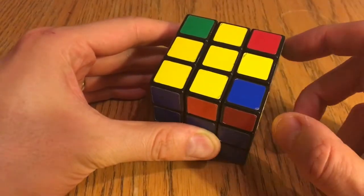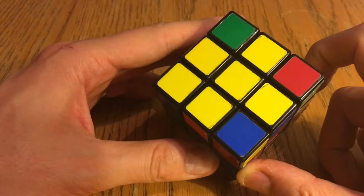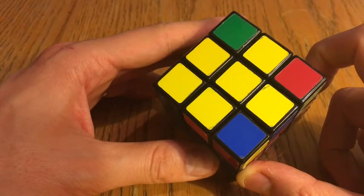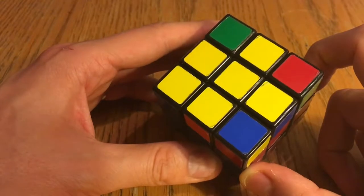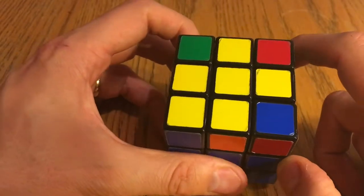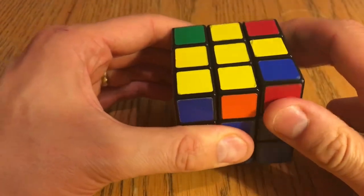Now usually when you see this pattern with a single corner piece in place, so it looks a little bit like a fish, you would expect performing the Sune algorithm I just showed you to yield the completed yellow face, but sometimes it doesn't happen. Watch what happens now when I perform the algorithm.